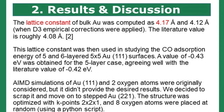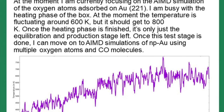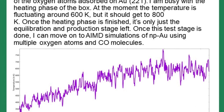I originally wanted to look at the AIMD simulation of Au(111) with two oxygen atoms, but I got undesirable results and instead decided to move on to Au(221). Here I used k-points of 2×2×1 to optimize the structure, then placed eight oxygen atoms on the top surface at random positions. This optimized structure can be found in figure four. At the moment I am busy running the AIMD simulation of this structure to see if the oxygen atoms might self-organize.